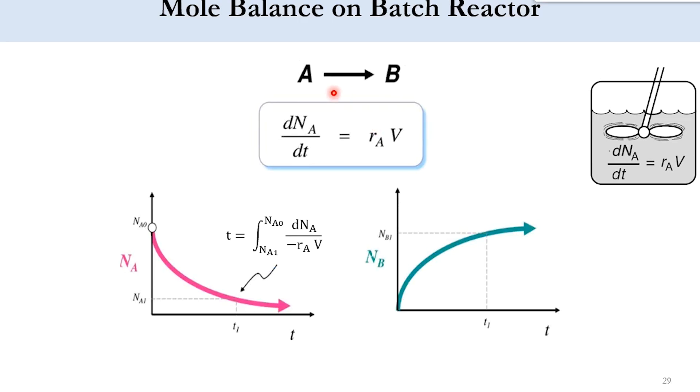So this is the general mole balance equation for the batch reactor which we will be using in our practices. And finally if you see here A goes to B, d n_a over dt equals r_a V. This is the equation as you can see that with time the number of moles of A are decreasing while the number of moles of B are increasing in the system, which is obviously understood that reactants will disappear and products will form.